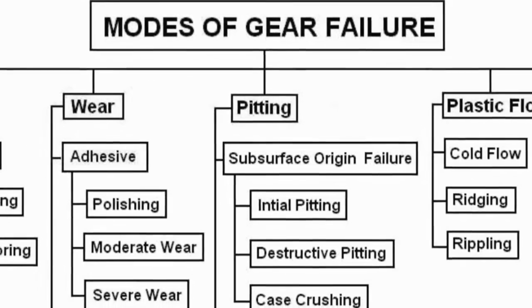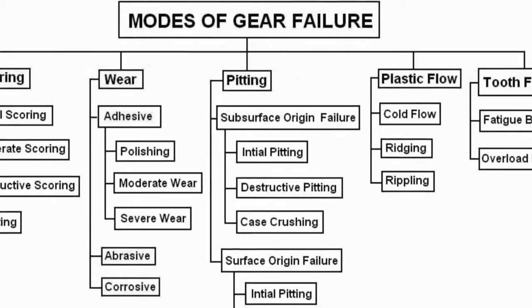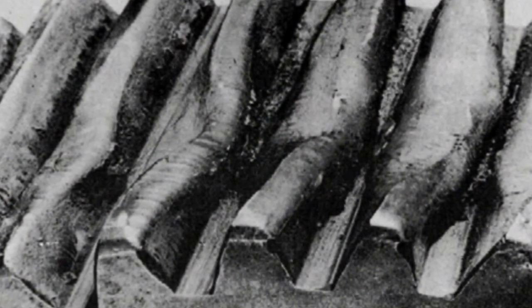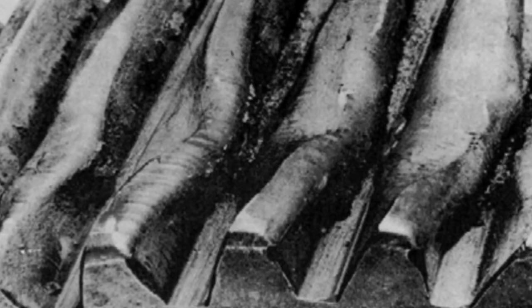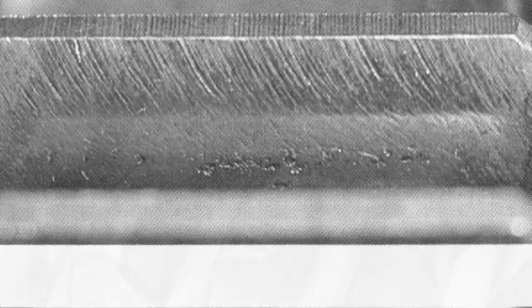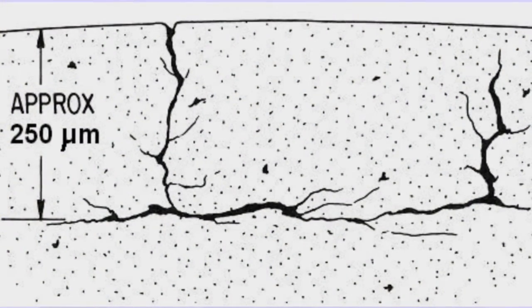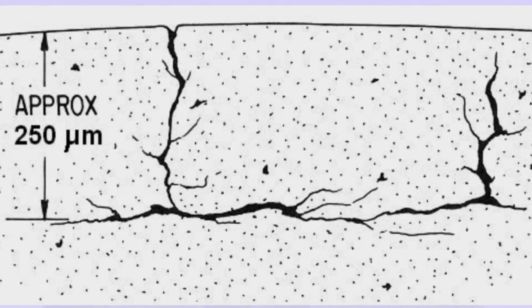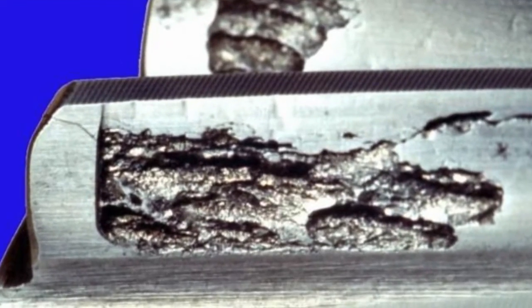A lot of things can go wrong with gears, but I'm only going to talk about things I've seen in Model A transmissions. Plastic flow deformation happens when gear teeth are just hammered into a different shape as a result of heat or repetitive smashing. Here's an example of micro-pitting and frosting that you might see as new gears are being broken in. Pitting occurs when metal fatigue cracks appear in the surface of the tooth — generally just normal fatigue over hundreds of thousands or millions of cycles. Here's an example of severe pitting.